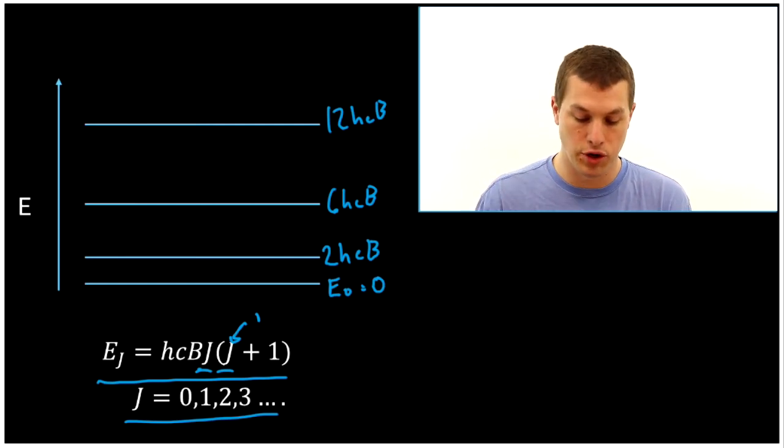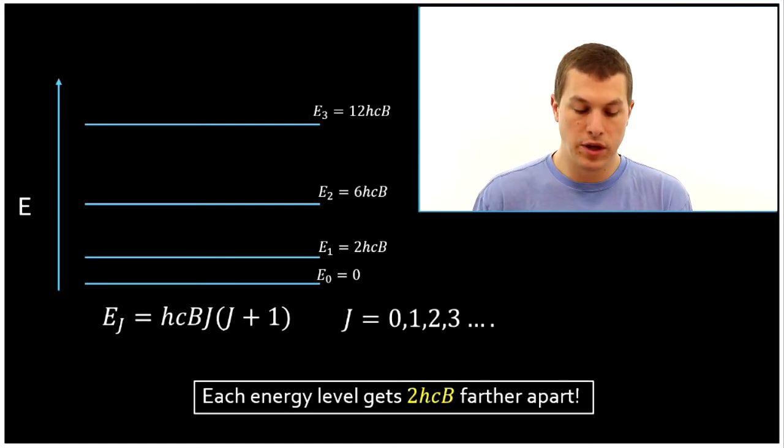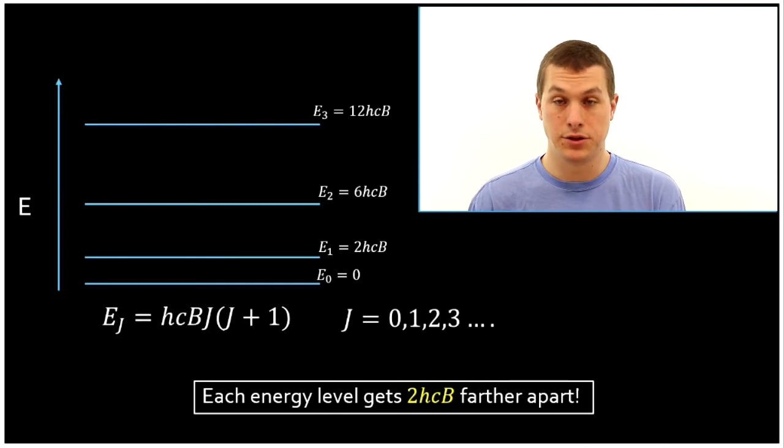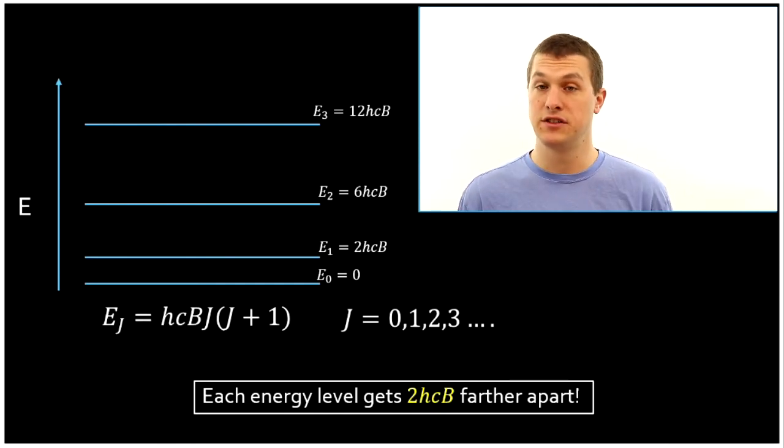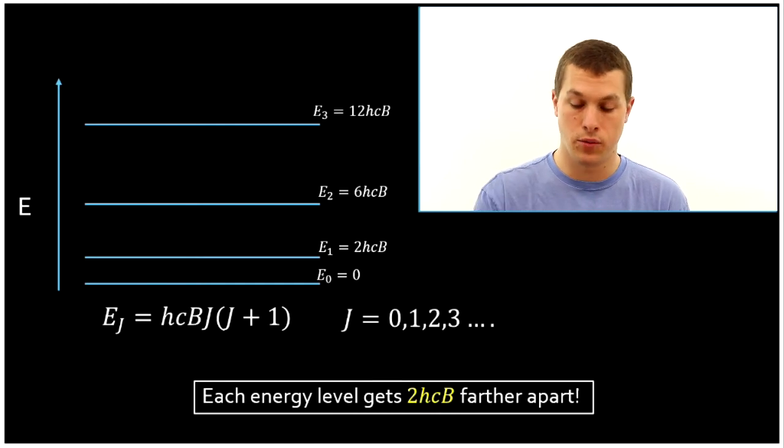Let's take a look at this written a little more neatly. Here are different energy levels. And each time we go up, we get 2 hCB farther apart. And what that means is, when we look at our microwave spectra, we're going to see a series of peaks, because each of these transitions will be at different energies. Let's take a look at what I mean by that.